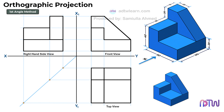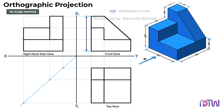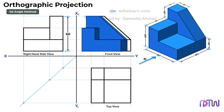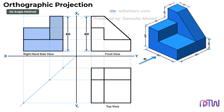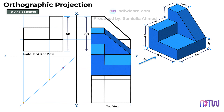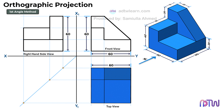Important points to remember: the height of the front view and the height of the side views are always equal. This is because when we go from the front view to the side view, the object turns 90 degrees about the x1y1 axis. Next, the width of the object in the front view is equal to the width in the top view, because here also the object turns 90 degrees but along the xy line.